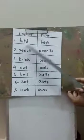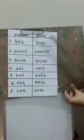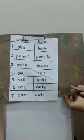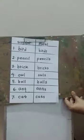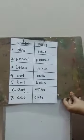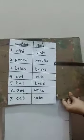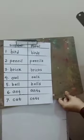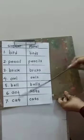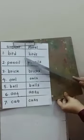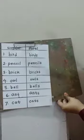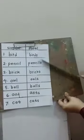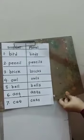Singular word — when I change the word into plural: bird becomes birds, pencil becomes pencils, brick becomes bricks, owl becomes owls, ball becomes balls, ant becomes ants, cat becomes cats. So bird was singular, that's why we didn't add S. But when I change the singular word into plural, we have to add S.